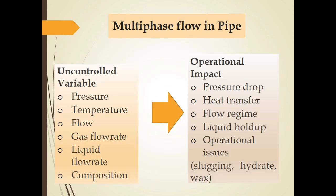Pada aliran multi-phase di dalam pipa, beberapa variabel yang tak dapat dikontrol adalah tekanan, suhu, flow, gas flow rate, liquid flow rate, maupun komposisi. Dampak terhadap pengoperasian adalah pressure drop, heat transfer, flow regime, liquid hold up, atau beberapa isu operasi yaitu slugging, hidrat, atau pembentukan wax. For multi-phase flow in pipe, some uncontrolled variables are pressure, temperature, flow, gas flow rate, liquid flow rate, and composition. The operational impacts are pressure drop, heat transfer, flow regime, liquid hold up, and operational issues such as slugging, hydrate, and wax formation.